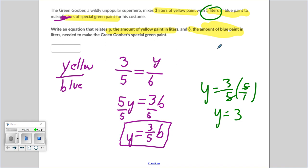I just thought of a better way to show this. When B is five, I replace B with five, and Y is three, and that should make sense. Three liters of yellow goes with five liters of blue.